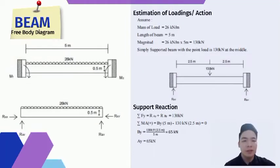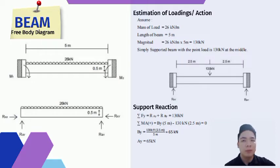As shown in the slide, the free body diagram has been drawn. The mass of the load is 26 kN per meter and the length of the beam is 35 meters, so the magnitude of the total load is 130 kN. This is a simply supported beam with a point load of 130 kN at the middle, giving a support reaction of 65 kN at both sides.